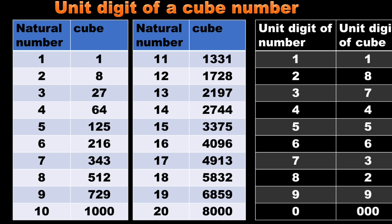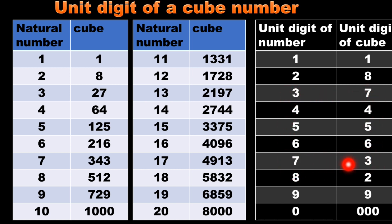For 2 and 8 they are exchanged — for 2 the cube ends in 8, and for 8 the cube ends in 2. For 3 and 7 they are also exchanged. And when a number ends with zero, its cube always ends with triple zeros.